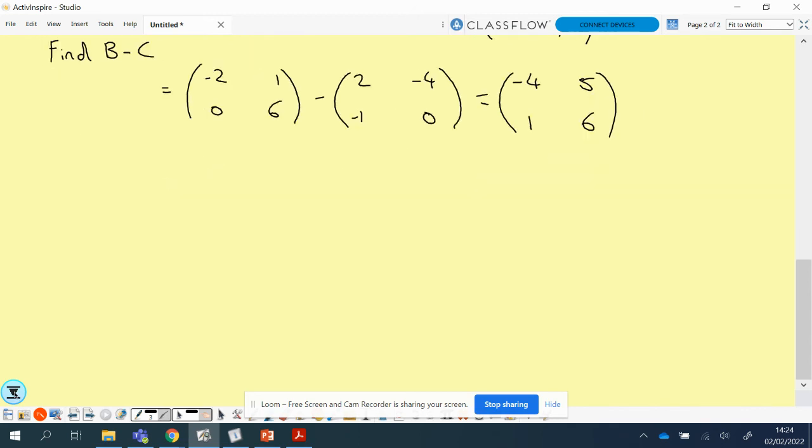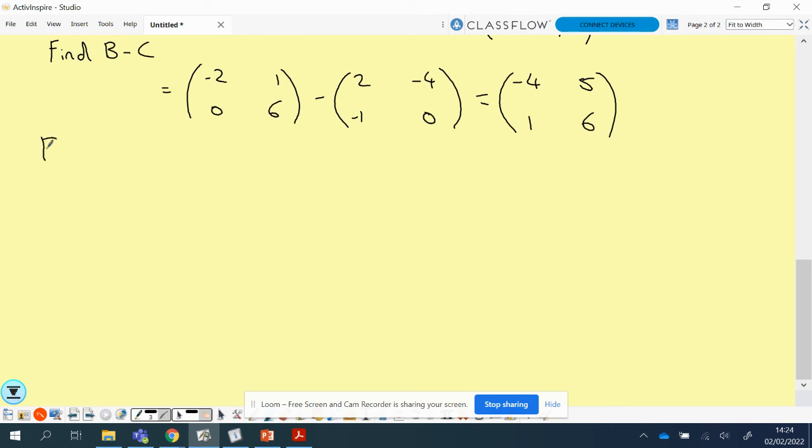Let's now put into play the scalar multiplication with this last one we're going to look at. So we're going to find 3 lots of A plus 4 lots of C. That's going to be 3 lots of A matrix, the A matrix was 3, 2, negative 3 and 1, we're going to add 4 lots of the C matrix which is 2, minus 4, negative 1 and 0. Now at this point here, before we add it's probably easier to multiply each entry by the scalar out front.